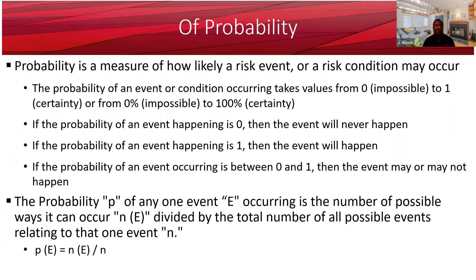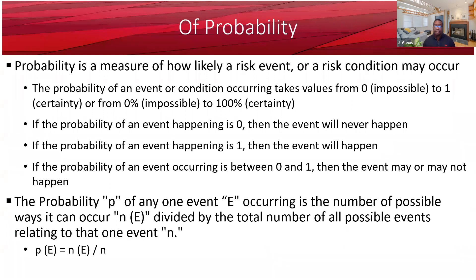So how do we express this in mathematical terms? You can say that the probability P of any one event E occurring is the number of possible ways it can occur — that's NE — divided by the total number of possible events relating to that one event, N.